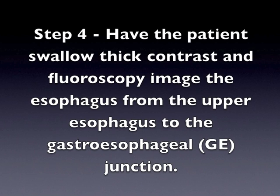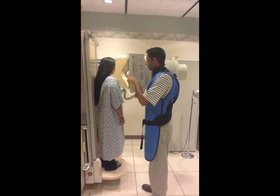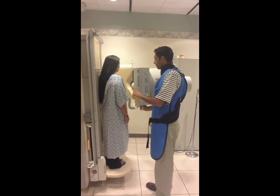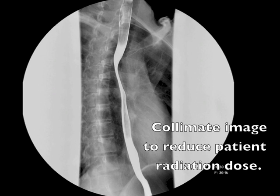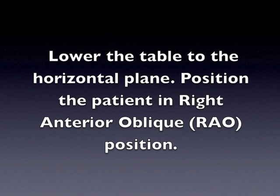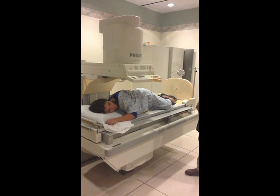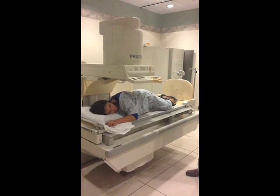Step 4: Have the patient swallow thick contrast and fluoroscopy image the esophagus from the upper esophagus to the gastroesophageal junction. Tell the patient that you will count to 3 and have them swallow on 3. Begin fluoroscopy when you count to the number 2. To reduce the patient's overall dose, collimate the image to a narrower field, visualizing mainly the esophagus. Lower the table to the horizontal plane and position the patient in the right anterior oblique (RAO) position. This means that the anterior portion of the patient's right shoulder will be touching the table and the patient will be at an oblique angle.